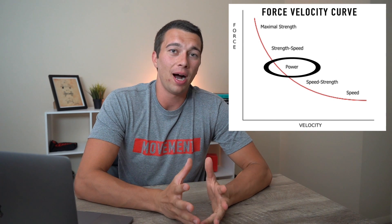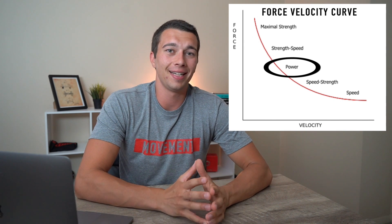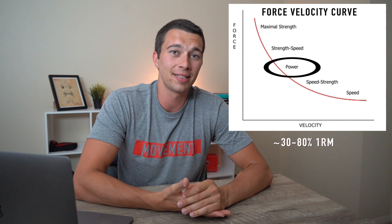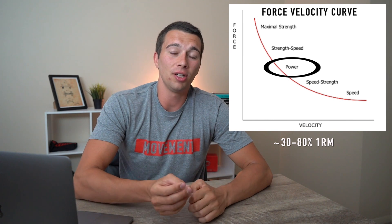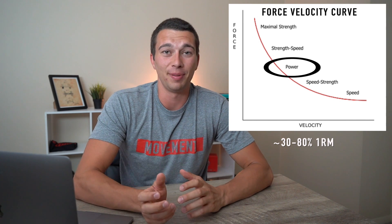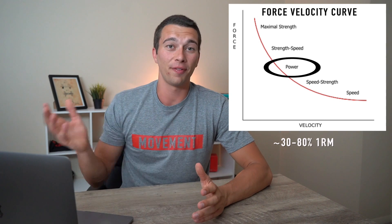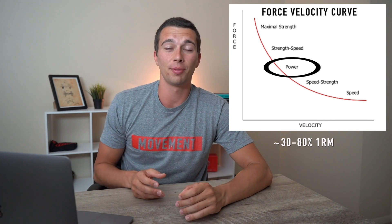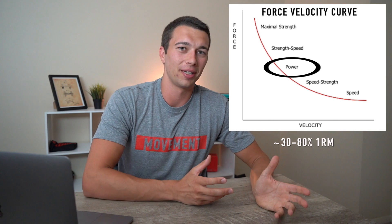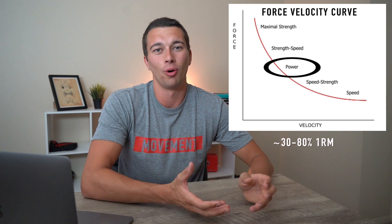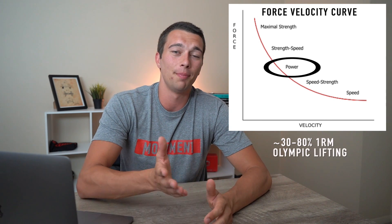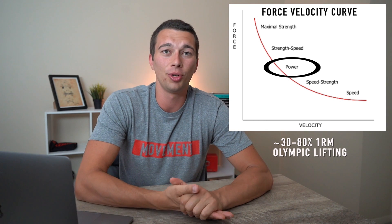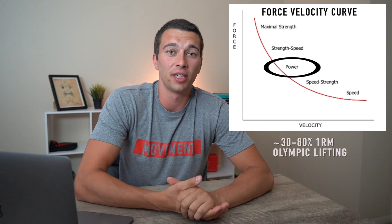Moving on to power — power can be defined as anything from 30 to potentially 80 or 85% one rep max, but with a little bit more force and speed. This is something that's not super fast like sprinting or box jumps, but also not super slow like a grinding rep. A lot of times Olympic lifting fits right in the middle of that power zone, and potentially something like a loaded jump squat could fit there as well.